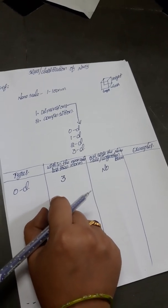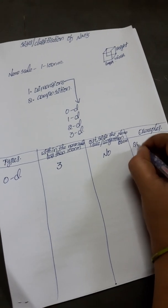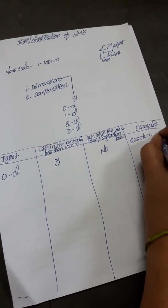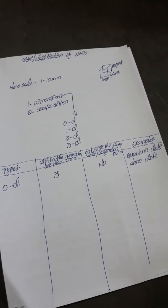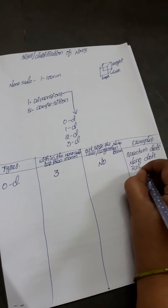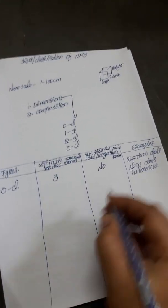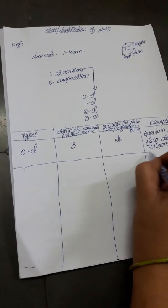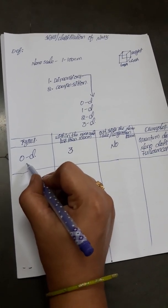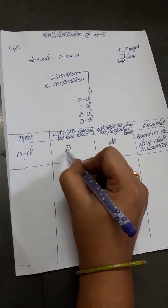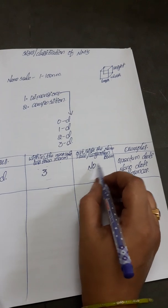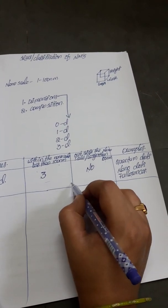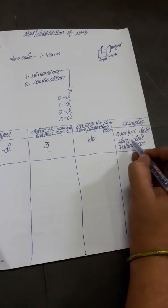Examples of zero dimensional nanomaterials are quantum dots, nanodots, and fullerenes. To summarize: zero dimensional nanomaterials are materials where all three dimensions are within the nanoscale or less than 100 nanometers, and no dimension should be outside the nanoscale or larger than 100 nanometers.